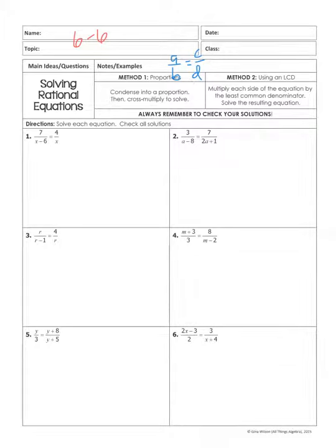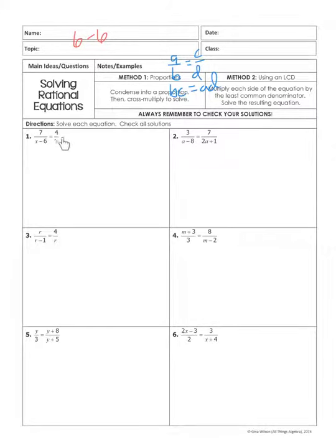We already know that cross products are equal: if I multiply B times C and A times D, those cross products are equal. So with proportions, you can just use cross products. You can only use method one if you have one fraction equaling one fraction.